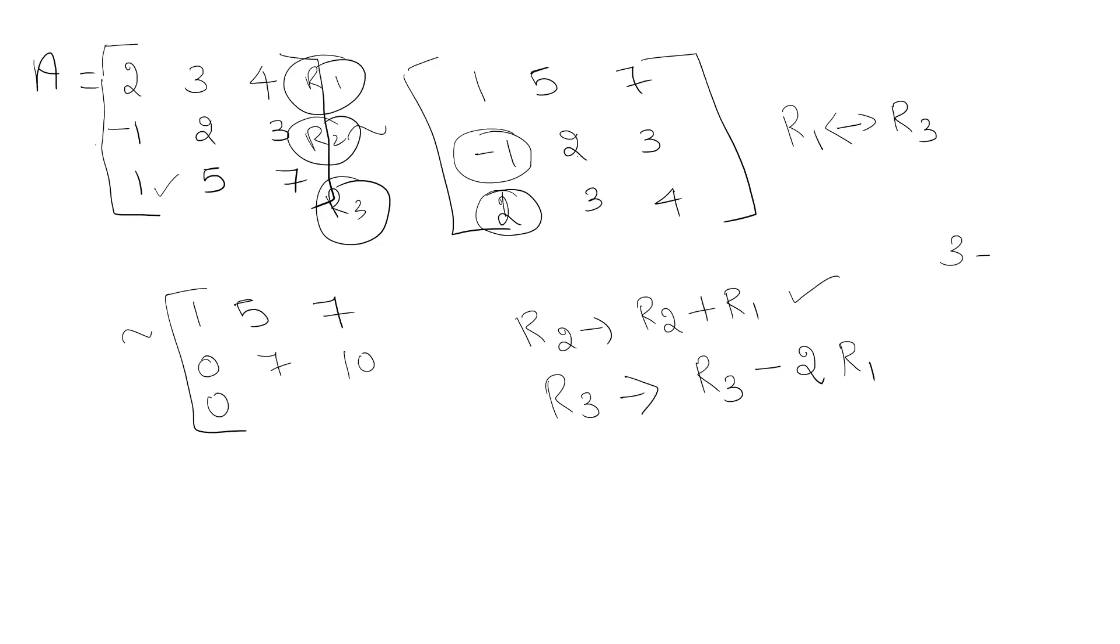You can do it in your rough note. 3 minus 10 is -7. And what will happen to the next value? We have 4 minus 2×7, so 4 minus 14 will be -10. Now A has been transformed into this matrix.